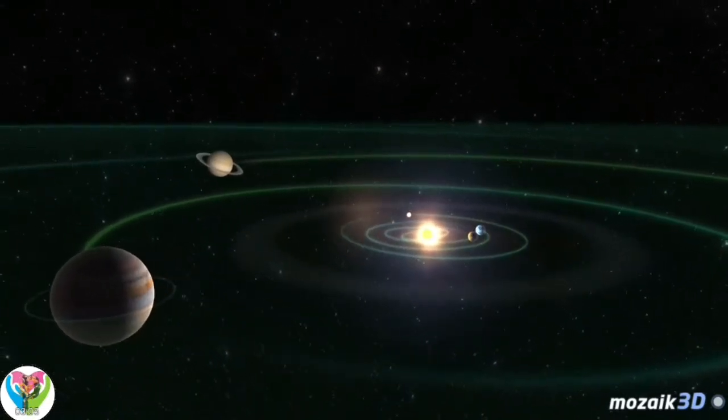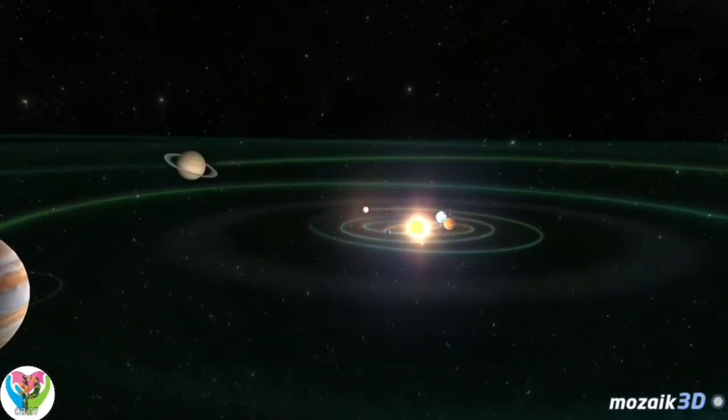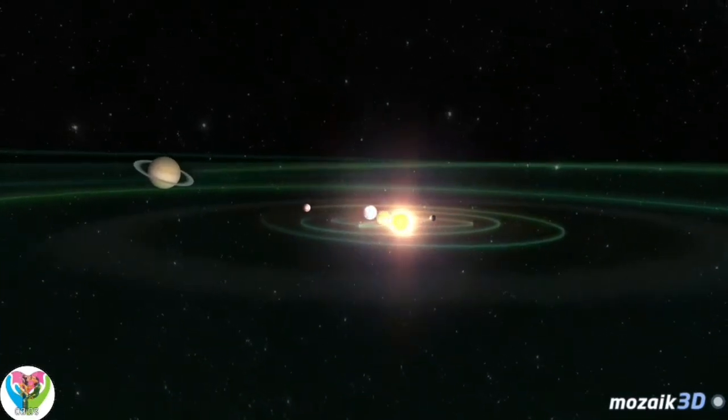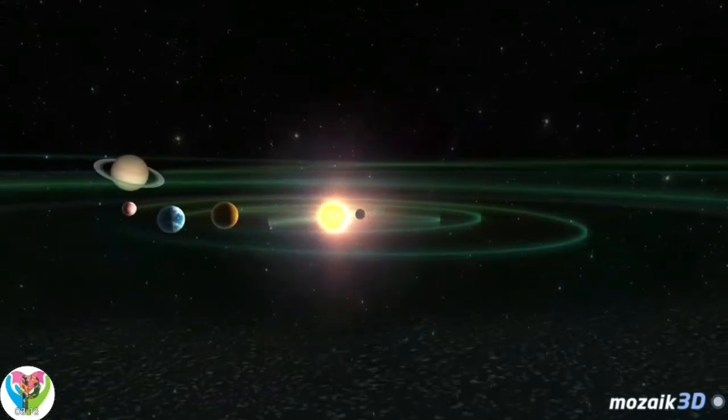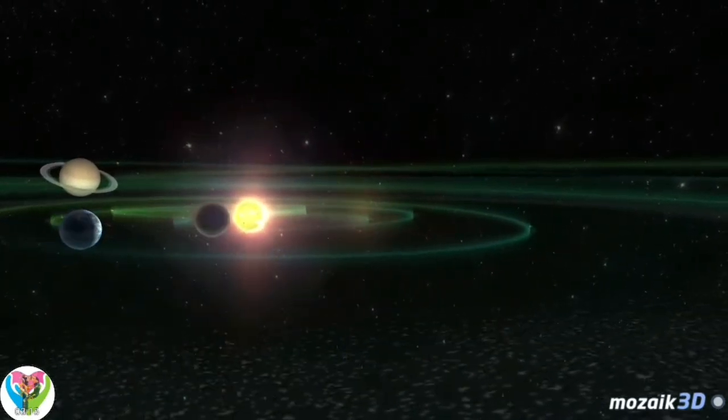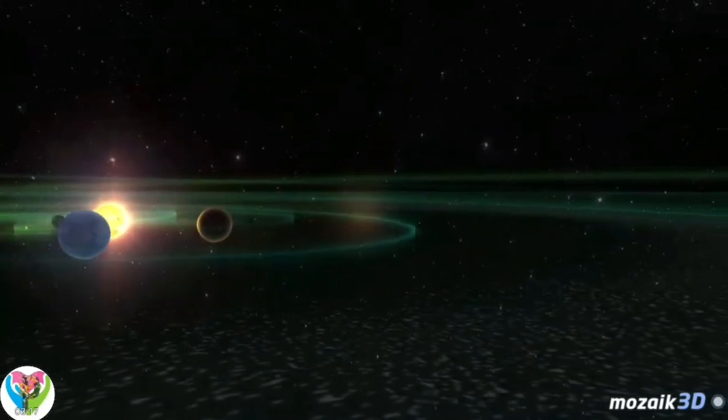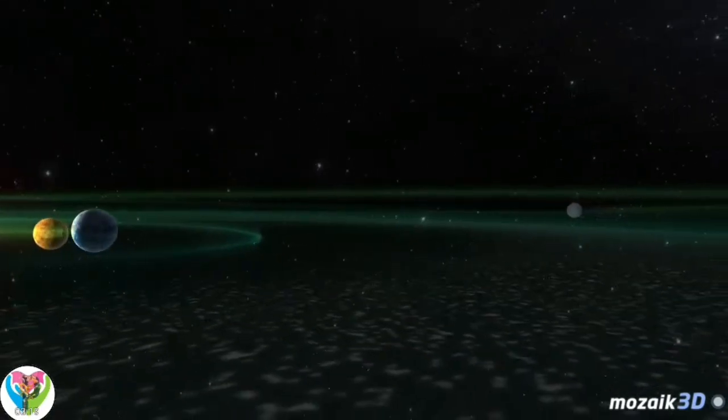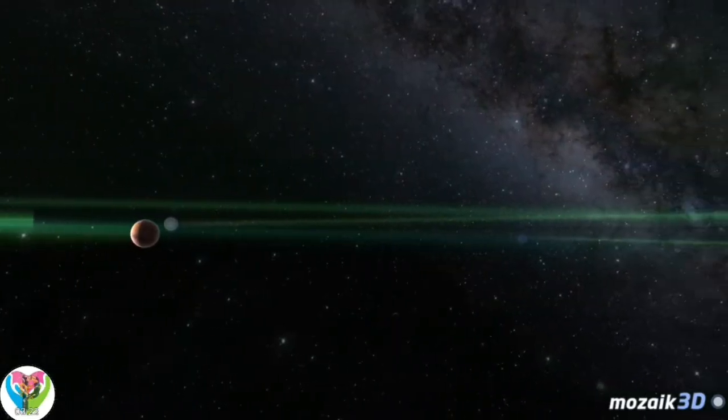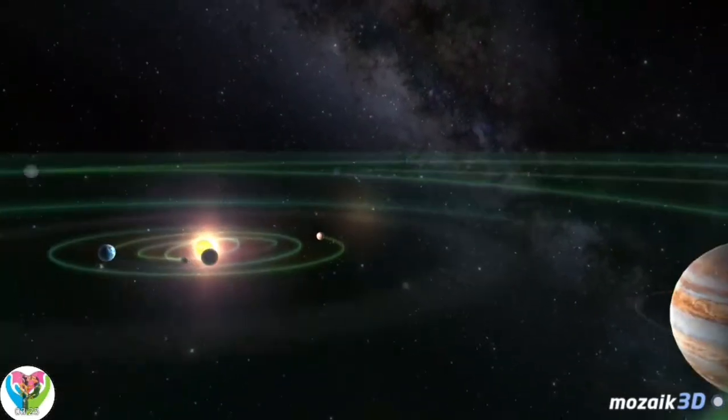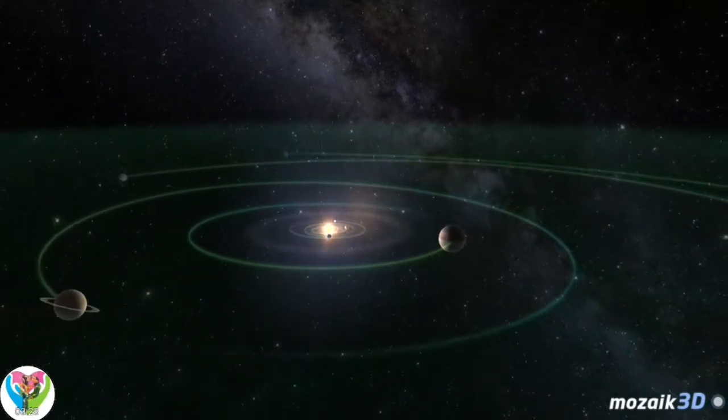Besides planets, there are billions of small objects in the solar system. Asteroids can be found just about everywhere. Many of them have orbits that cross that of the Earth. Most of the asteroids are located in two zones. The inner asteroid belt is between Mars and Jupiter, where there are at least one billion asteroids larger than one kilometer in diameter.